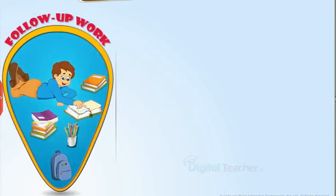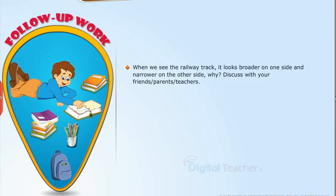Follow up: When we see the railway track, it looks broader on one side and narrower on the other side. Why? Discuss with your friends or parents or teachers.